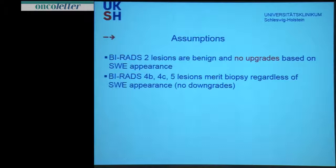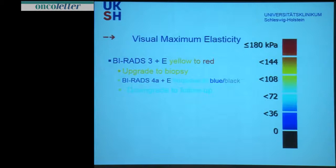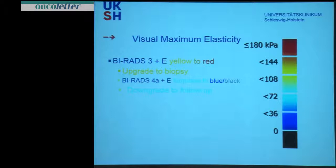BIRADS 2 lesions are benign and no upgrades should be done on shear wave appearance. BIRADS 4B, C, and 5 lesions always go to biopsy regardless of any shear wave appearance. On the stiffness scale starting from black up to red, a BIRADS 3 finding combined with a yellow-to-red finding should be upgraded for biopsy. On the other hand, a BIRADS 4A finding combined with a turquoise, blue, or black color could be downgraded to a BIRADS 3 finding for follow-up only.